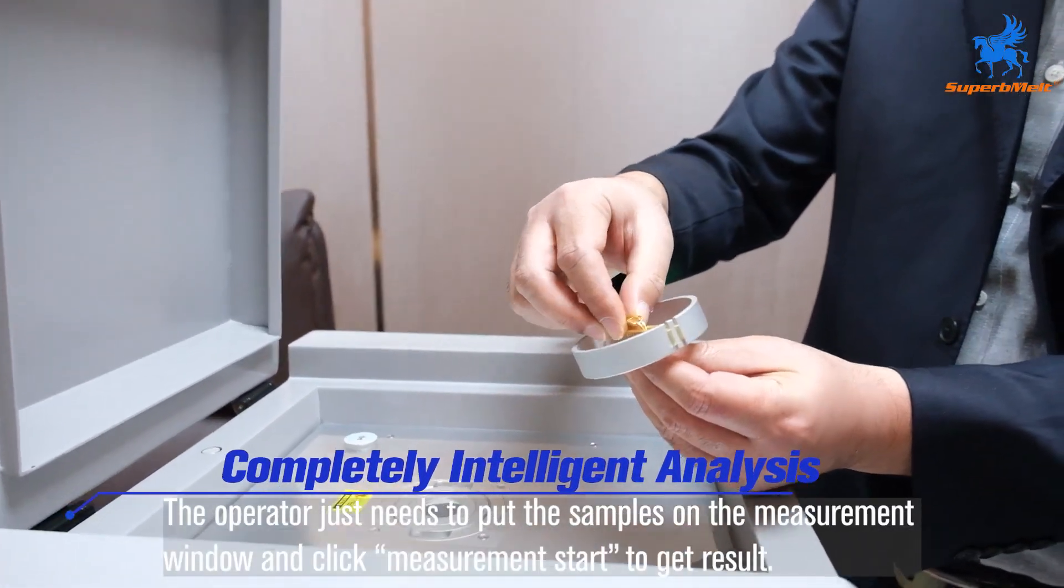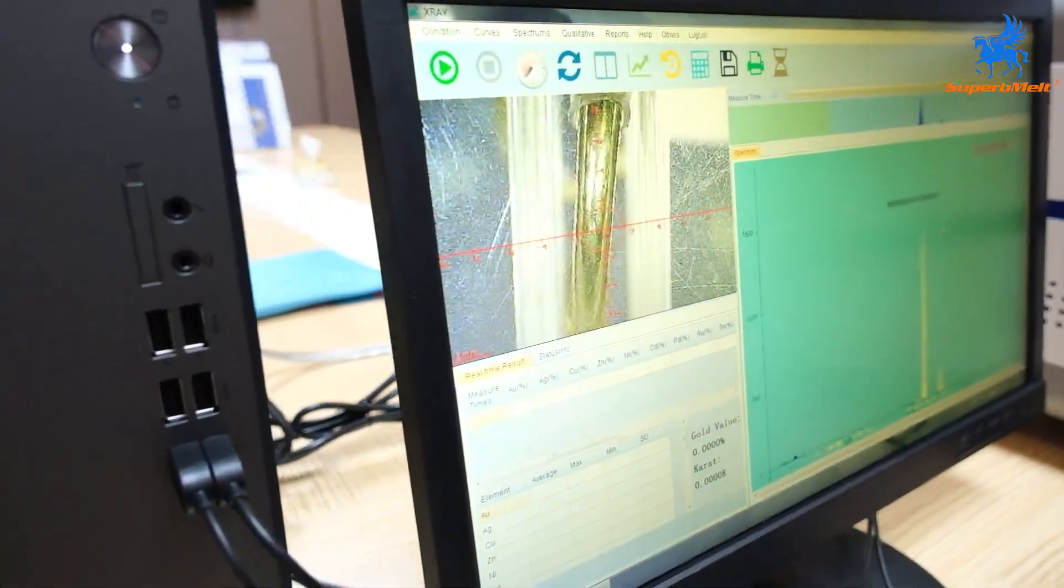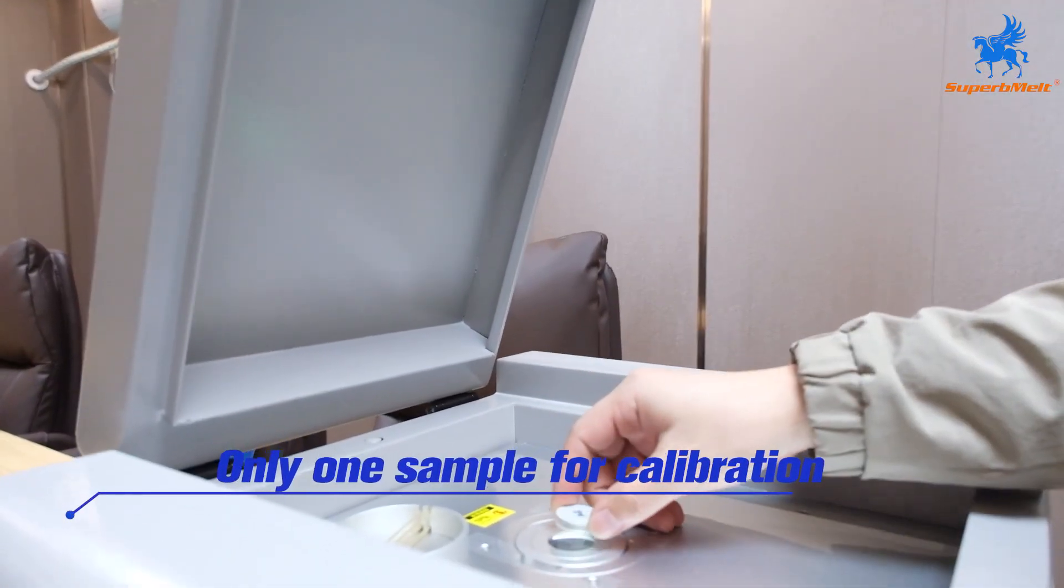The operator just needs to put the samples on the measurement window and click measurement start to get result. Only one sample for calibration.